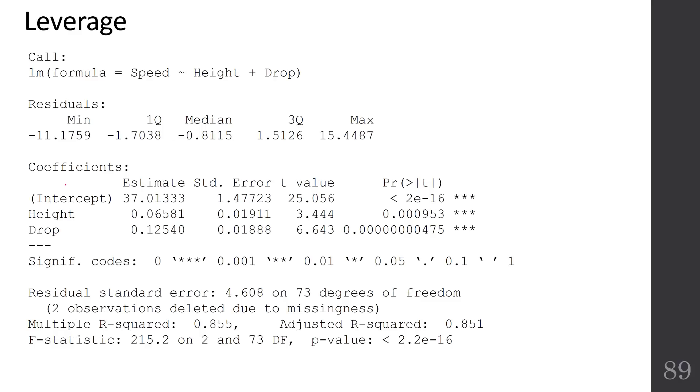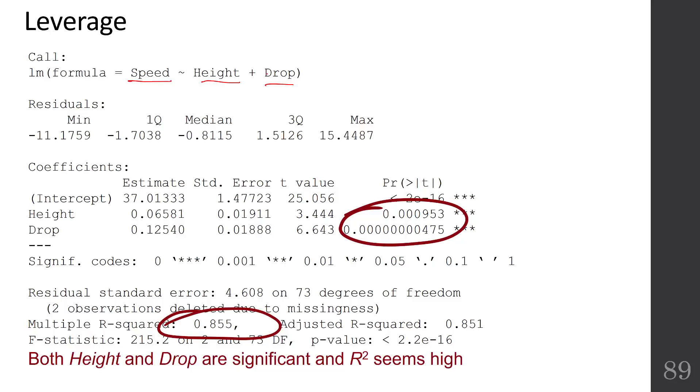Recall our Coaster data set that we've been working with. We've regressed speed on height and drop. We've got our output here from R. We notice that our p-values are really low and our r-squared is pretty high. So it looks like this model is explaining a lot of the variability in speed using height and drop. Height and drop are both highly significant because of those low p-values.